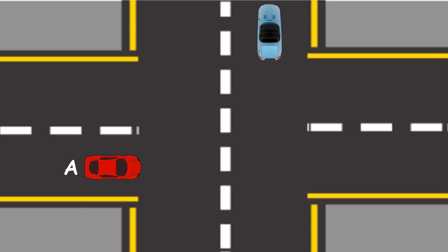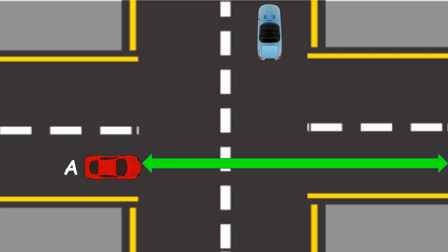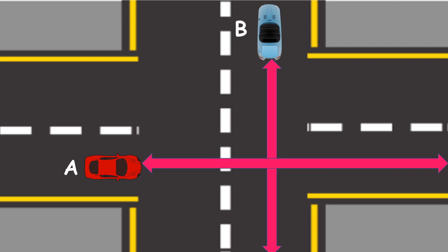When car A is moving, the path it passes through represents a line. And also in car B, they meet at a certain point. Look at the two lines — they form a 90-degree angle. This line pair is called Perpendicular Lines.